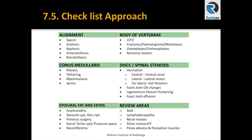That's our complete checklist based on A, B, C, D, E. Alignment includes spasm, scoliosis, kyphosis, anterolisthesis, and retrolisthesis. The body of the vertebrae or bone marrow issues include LSTV or lumbosacral transitional vertebra, fractures, mass lesions such as hemangiomas or metastasis, osteophytes, and enthesophytes.